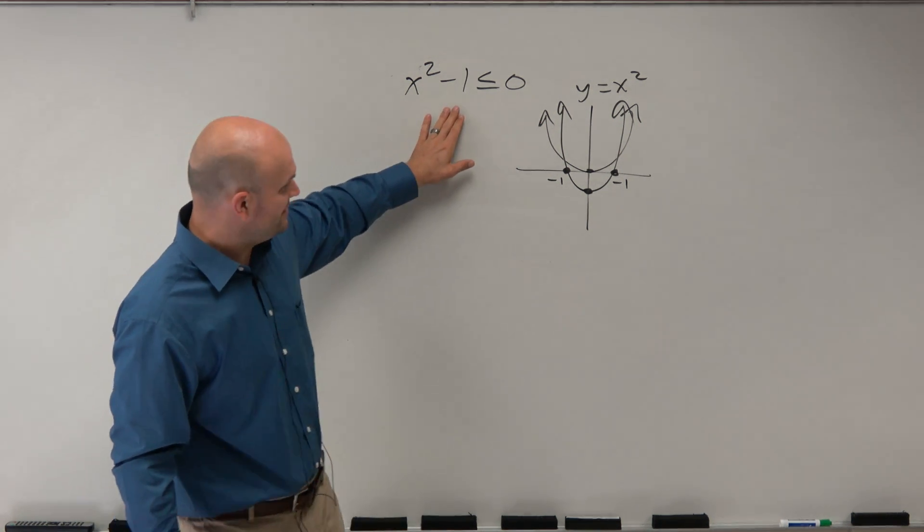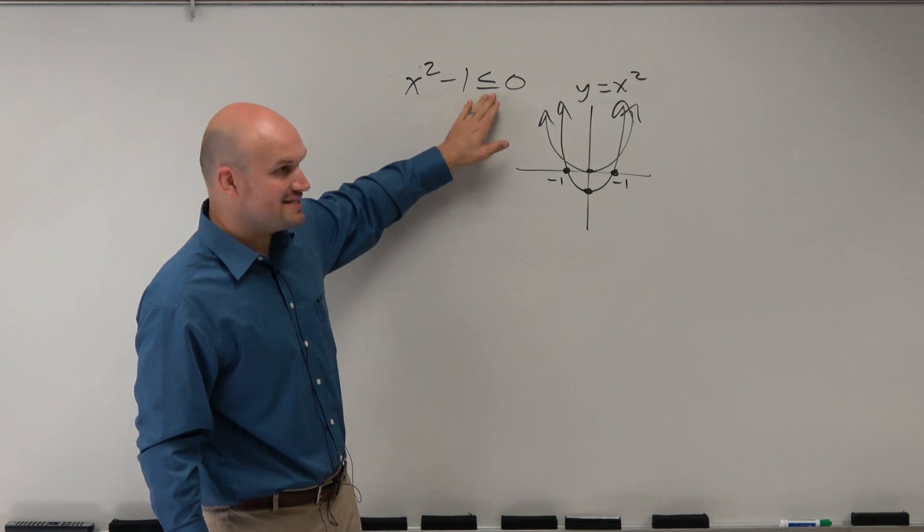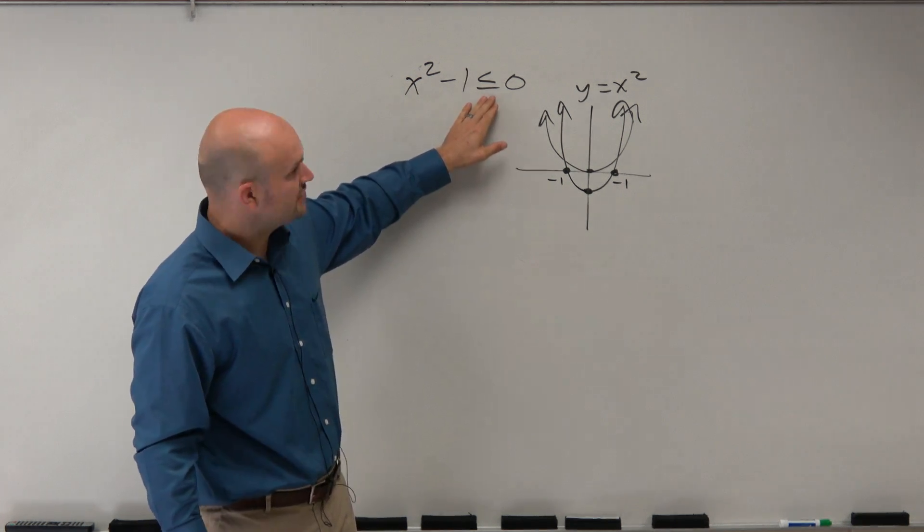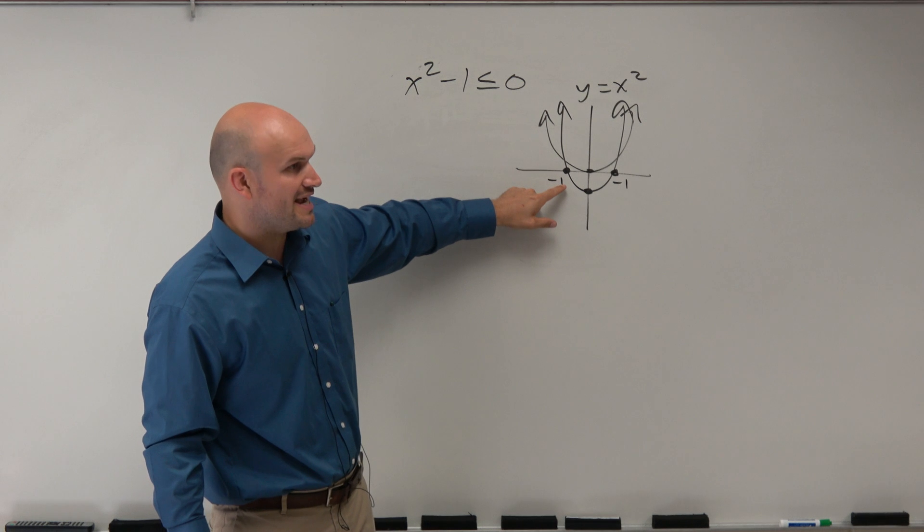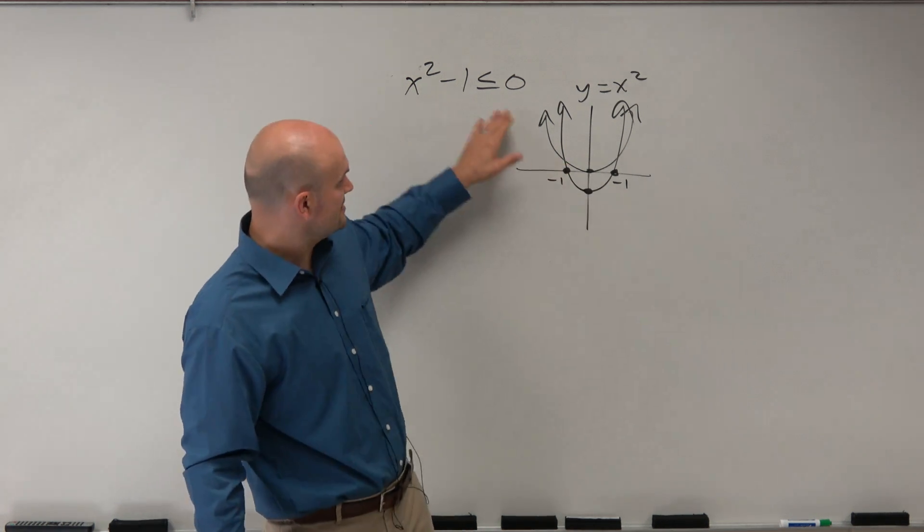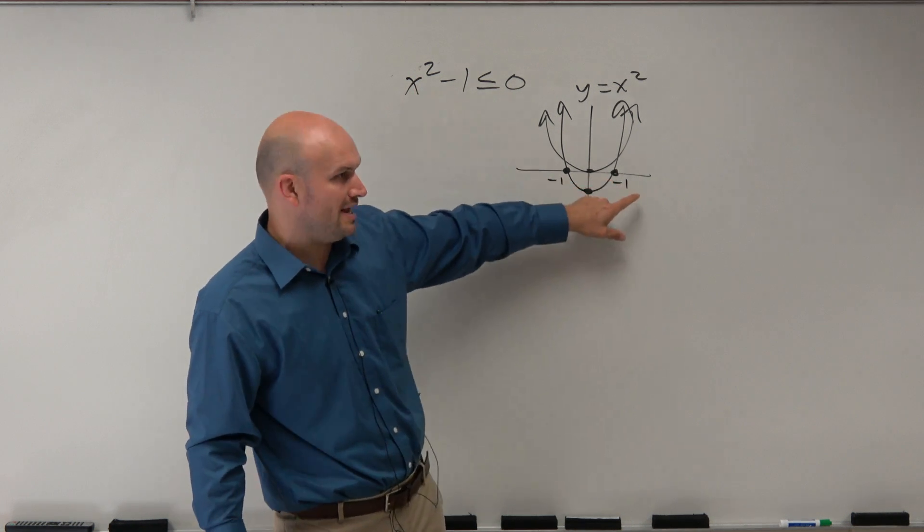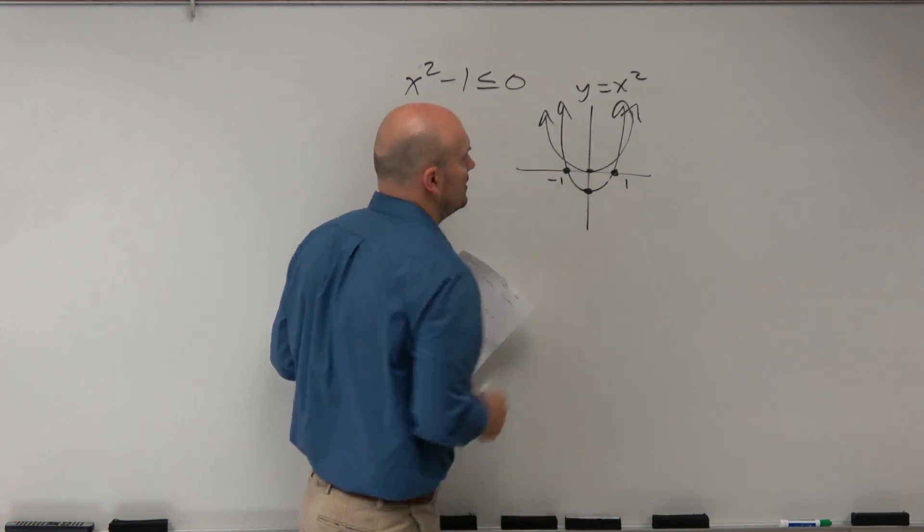So if you look at this expression, basically what it's saying is, when is this graph less than 0? Well, you can say it's less than 0 between negative 1 and positive 1. Right? You can see the whole graph is less than 0 for the x values between negative 1 and positive 1.